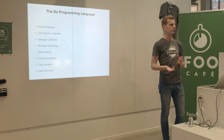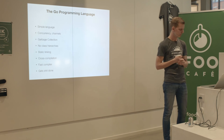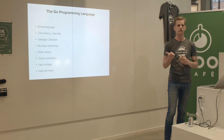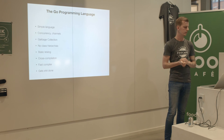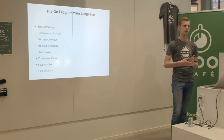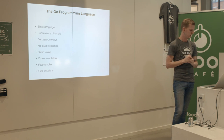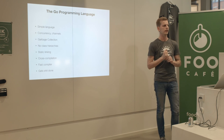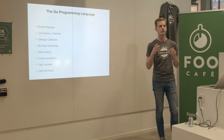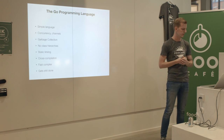Go has channels built into the language as a means to communicate between Go routines. It has a garbage collector that's quite nice nowadays - in the last two releases they've improved it very much, so the stop-the-world effect is down to a minimum. Go doesn't have a crazy type system with 300 abstract classes. It's very simple: just structs and interfaces.